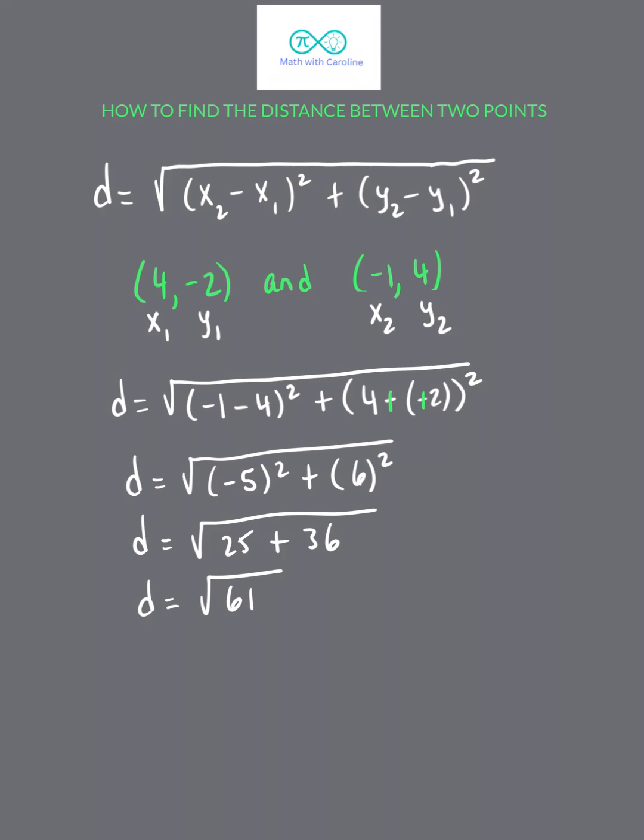Now we cannot simplify the square root of 61, because 61 is not divisible by any perfect squares. So if your teacher wants you to leave your answer in exact form, that would be it. Otherwise, you can use a calculator and round to the nearest hundredths, which is two decimal places for a distance of 7.81.